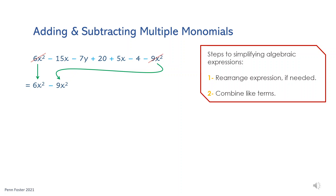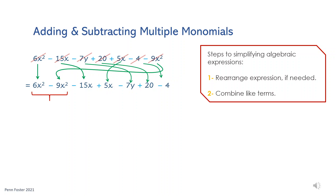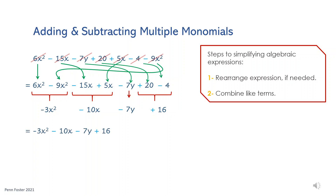Bring down minus 15x and plus 5x. Bring down minus 7y — no like terms found for this one. Move on and bring down plus 20 and minus 4. Now start from the left and combine each group. 6 minus 9 is negative 3, so it's negative 3x squared. Next, add negative 15x and 5x — it's negative 10x. Bring down minus 7y as is. Finally, subtract 20 minus 4, which is 16. The final answer is negative 3x squared minus 10x minus 7y plus 16.